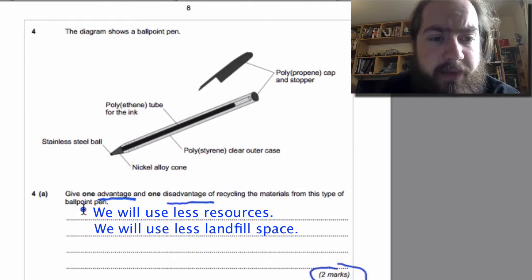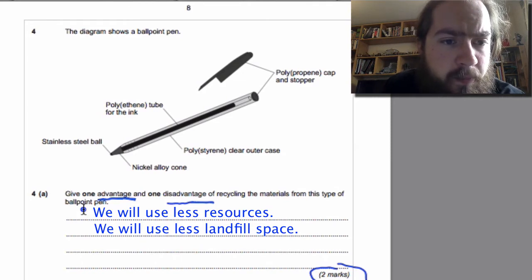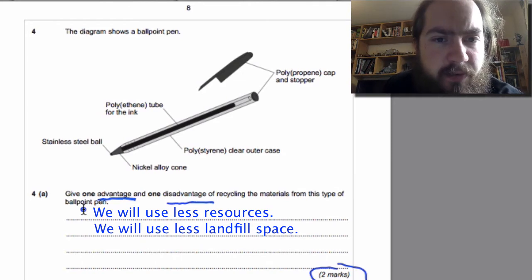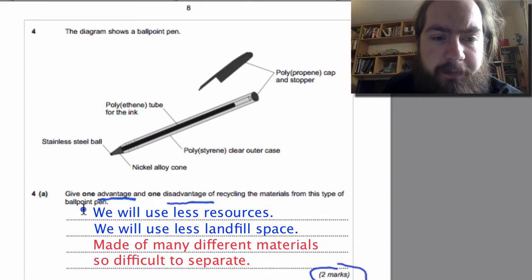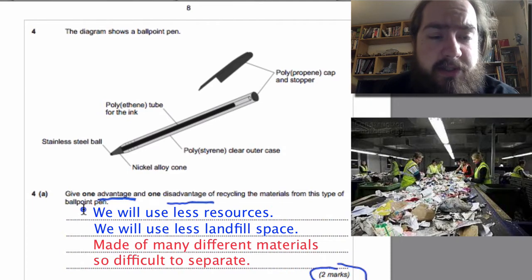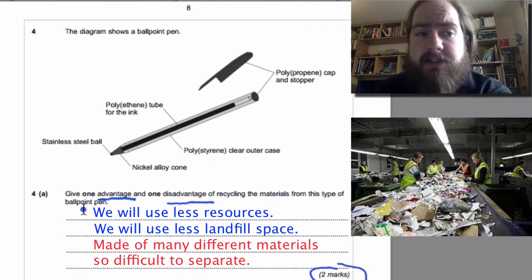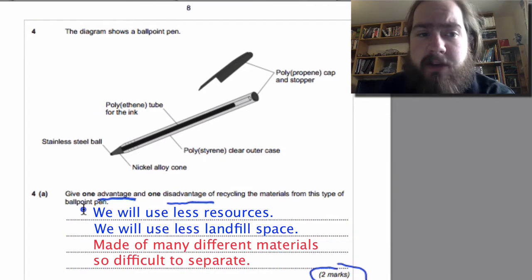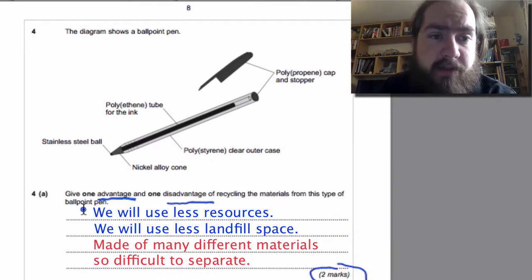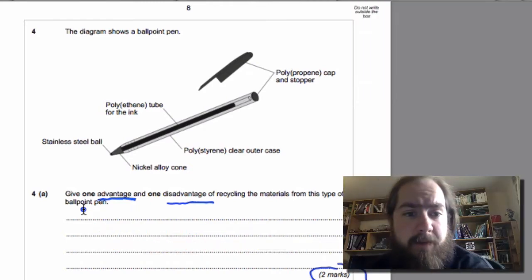For negatives, well we've got one, two, three, four, five different parts of this pen, so it will take a lot of time in order for us to separate those pieces. And to be honest, for a 10-20 pence pen, it will take more money in terms of time than you would actually get from recycling it.